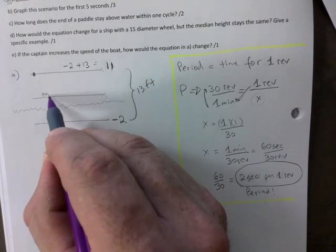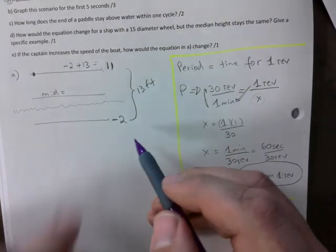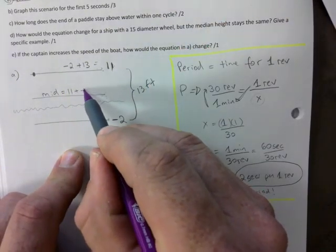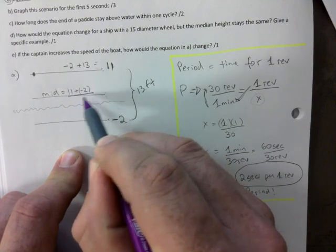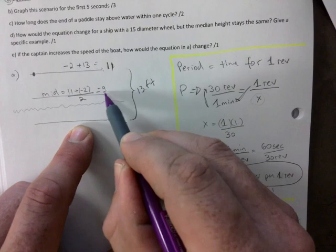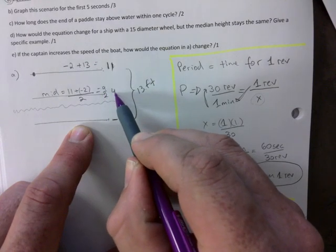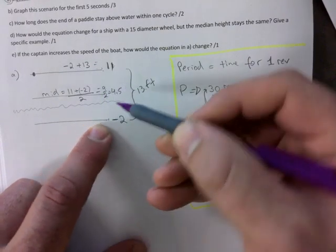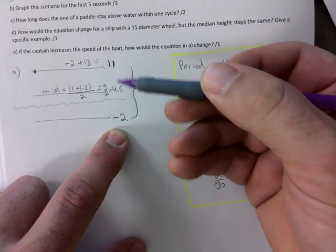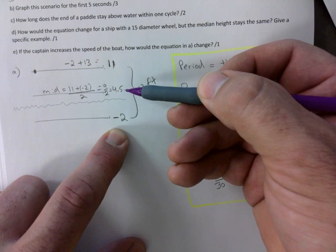How do we get the mid now? Mid is 11 plus negative 2 divided by 2. So that'd be 9 divided by 2, which is 4.5. So now we know that the mid is 4.5. We just went min plus max divided by 2 to get this one.